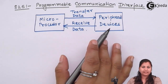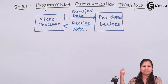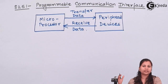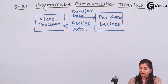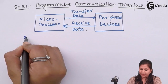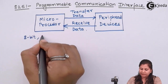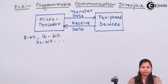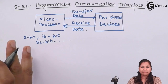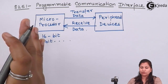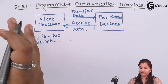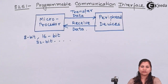When peripheral devices are located at some remote location, the microprocessor has to transfer or receive data over long distances. This data can be 8-bit, 16-bit, or 32-bit data. So this 8-bit, 16-bit, or 32-bit data has to be transferred over a long distance to the peripheral devices, and if peripheral devices are sending data, that data also has to be transferred.